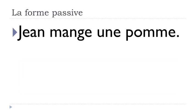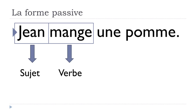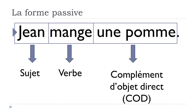I wanted to put a simple example sentence. Here we've got 'Jean mange une pomme.' Jean is the name of the person. Mange comes from manger — to eat — and it's the present form. Une pomme means an apple. Jean is the subject of the sentence, mange is the verb, and une pomme is what we call the complément d'objet direct.